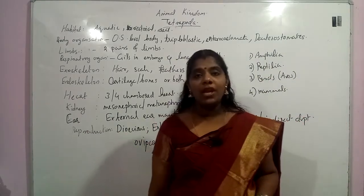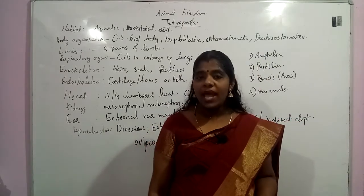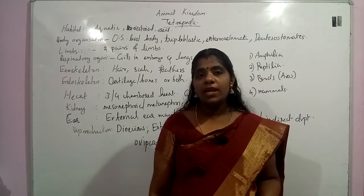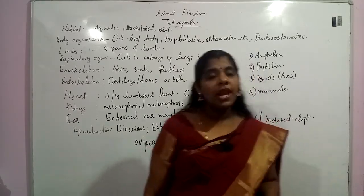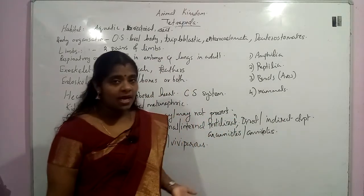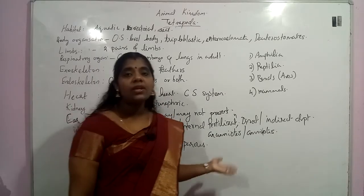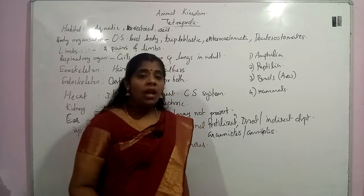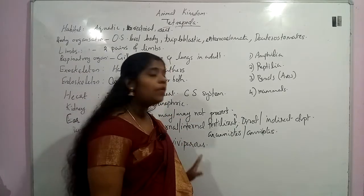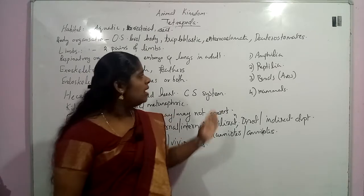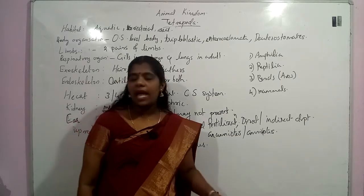Kidney may be mesonephric or metanephric. External ear may be present or absent. Middle ear will be present in all Tetrapoda. Reproduction — they are unisexual. They undergo external or internal fertilization. Development may be direct or indirect. They may be anamniote or amniote; mostly they are amniote. They show ovipary or vivipary. There are four different classes: Amphibia, Reptilia, Aves, and Mammals.